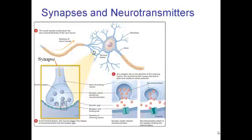Here's a close-up of the synapse. Inside you see what are called vesicles. These are like little sacs that contain neurotransmitters. These little pink circles represent neurotransmitters — special chemicals that are released into the synaptic gap. They bond to the receptor sites on the receiving neuron.